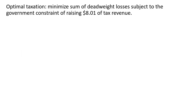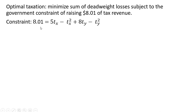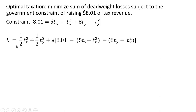Now we can look at optimal taxation by minimizing the sum of deadweight losses subject to the government constraint of raising $8.01 of tax revenue. The government constraint is that $8.01 equals the tax revenue coming from good X plus the tax revenue coming from the market for good Y. We're going to do this by setting up a Lagrangian with the deadweight loss in market X, the deadweight loss in market Y, and the revenue constraint.